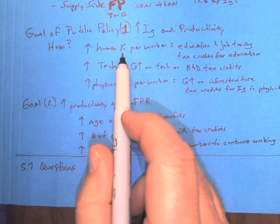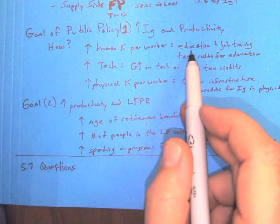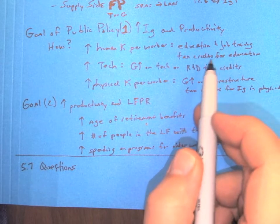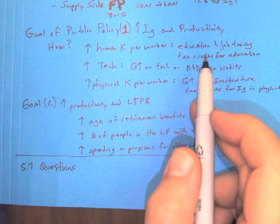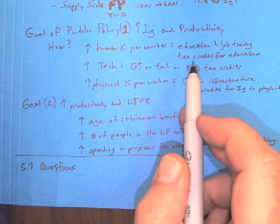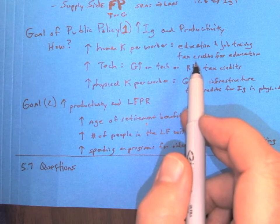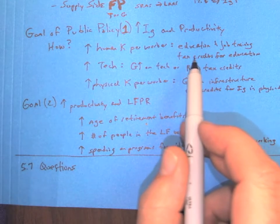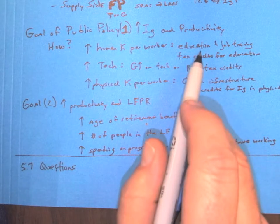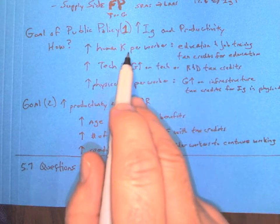In order to increase our human capital per worker, we can do things like education and job training. The policy for that would be things like tax credits for education, student loan forgiveness, subsidies on student loans while you're in school that pay your interest rates, and anything that's going to give you some kind of incentive to get education and training. So that can increase our human capital.